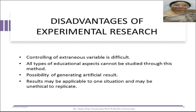The disadvantages of experimental research are that in educational research, controlling of extraneous variables is not easy. All types of educational aspects cannot be studied through this method. The possibility of generating artificial results exists in experimental research. Results or conclusions drawn may be applicable to one situation, but it may not always be feasible to replicate, or sometimes it may be unethical to replicate those findings.